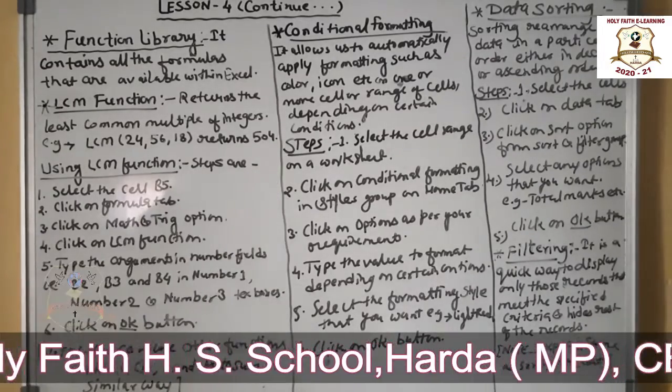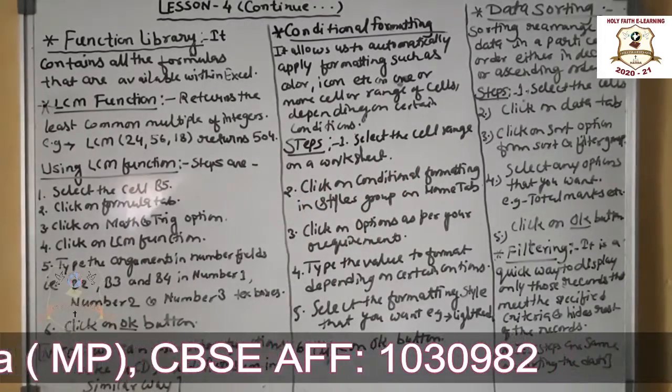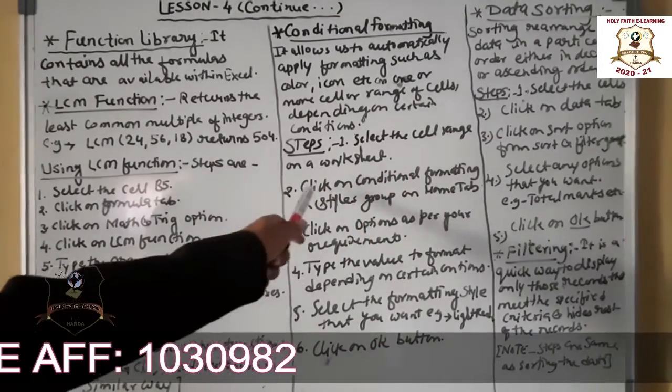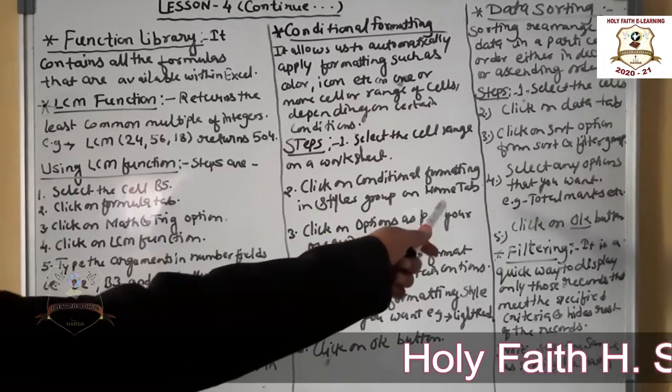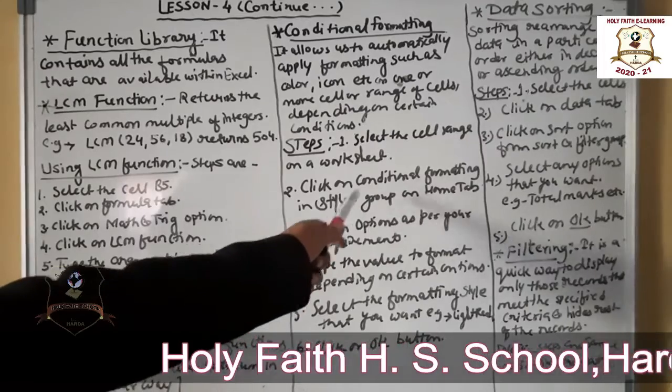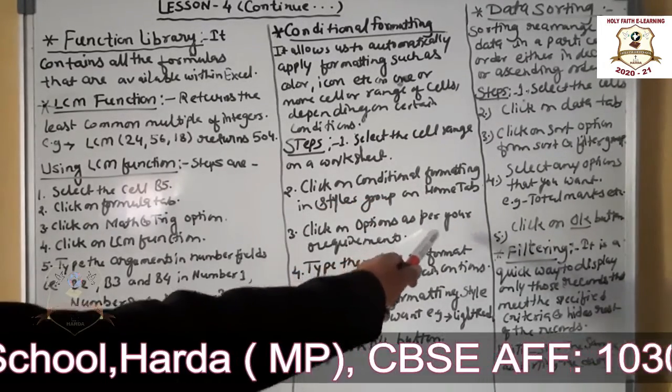How to apply? Steps are as follows: select the cell range on a worksheet, then click on the conditional formatting in styles group on home tab. When you click on home tab, there is a style group where you can find conditional formatting option. Then click on the option as per your requirements.